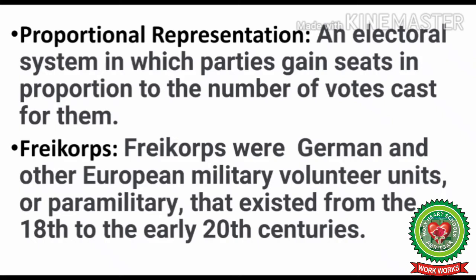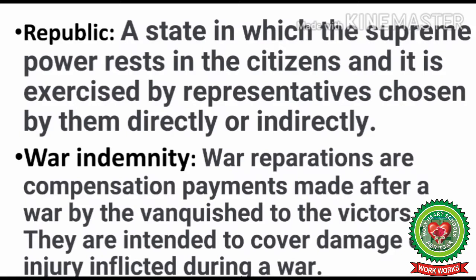The next word is Freikorps. Freikorps were German and other European military volunteer units or paramilitary organizations that existed from the 18th to early 20th centuries. They were private volunteer organizations consisting of German and some other Europeans, formed so that the infantry of Germany could be backed by strong detective agencies, with most Freikorps agencies working to detect secret information of the enemy group. Next is Republic — a state in which supreme power rests in the citizens and is exercised by their chosen representatives directly or indirectly.